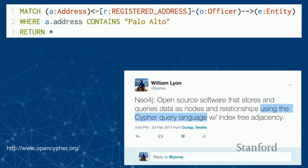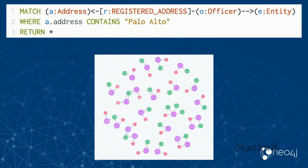This pattern finds all of the address nodes where the address property contains 'Palo Alto,' then traverses out from those address nodes to find all of the officers — people with an address in Palo Alto. Then from those officer nodes, it traverses out to find the entity nodes, the offshore corporations they're connected to. If we run this query against the Paradise Papers dataset in Neo4j Browser, we get a graph visualization like this.